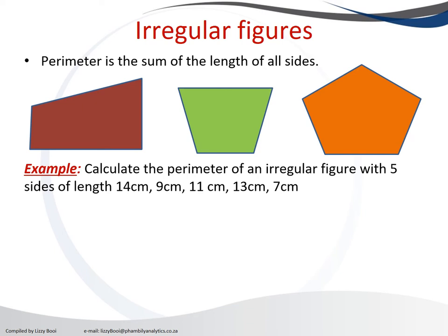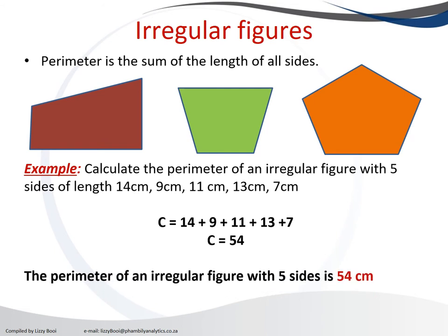Easy, we just add all of them: 14 plus 9 plus 11 plus 13 plus 7, and that will give us 54. That is our perimeter of this irregular figure.